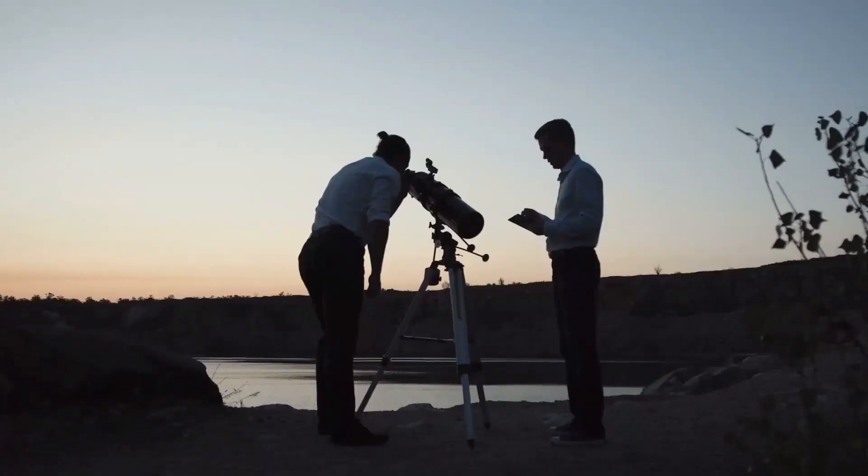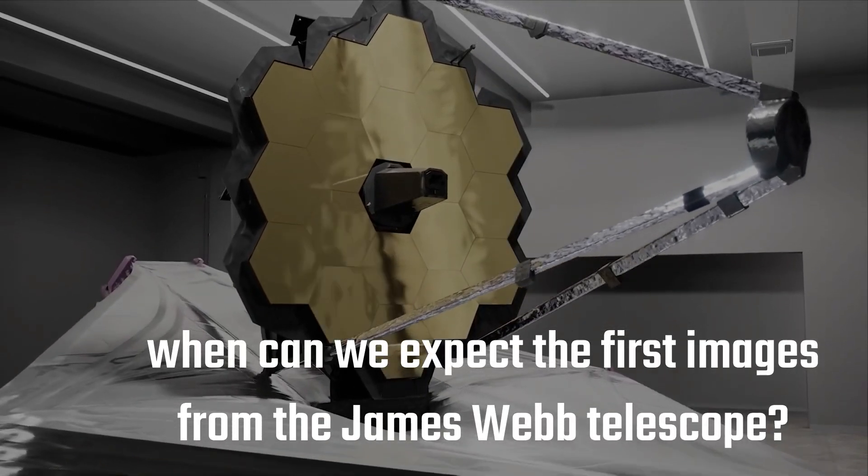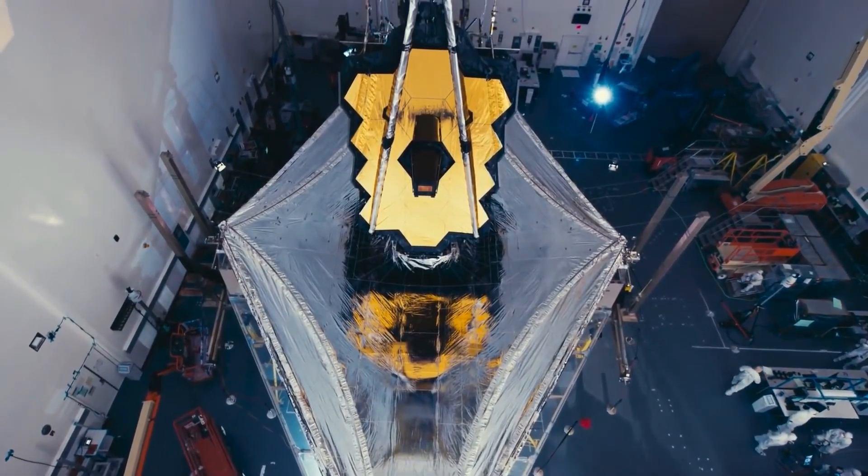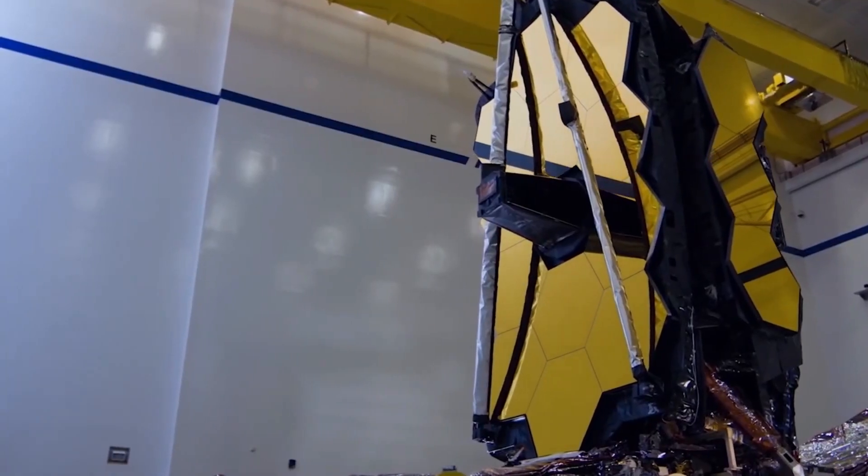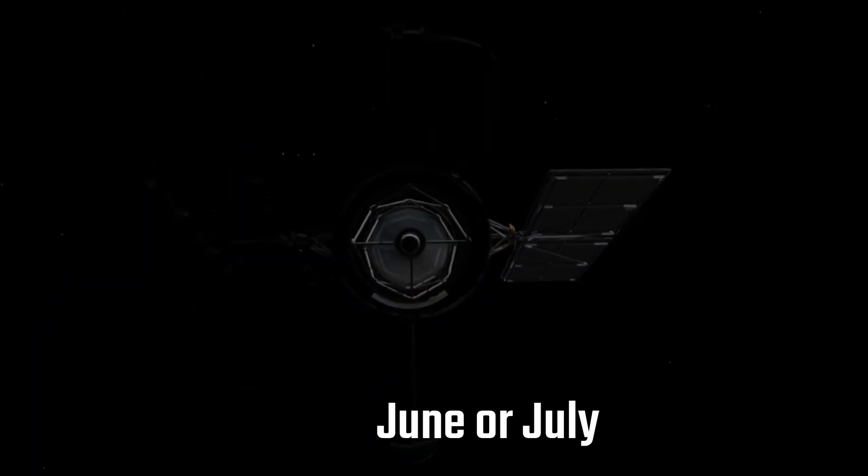So when can we expect the first images from the James Webb Telescope? After the successful launch of the JWST, the telescope's four science instruments will now be the focus of the control staff. The first scientific photographs are likely to be released in June or July.